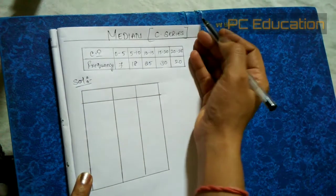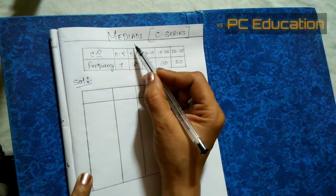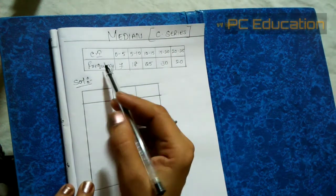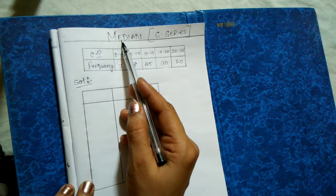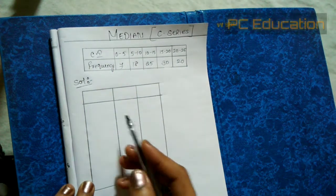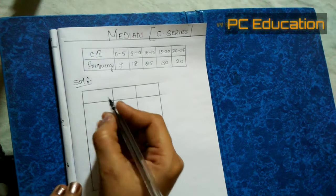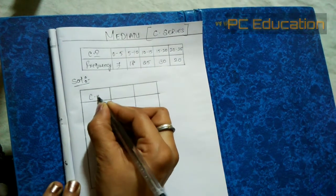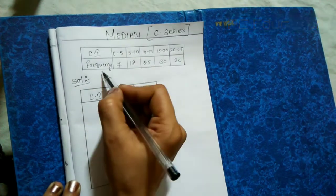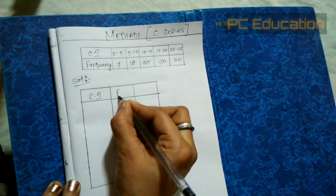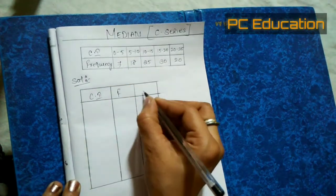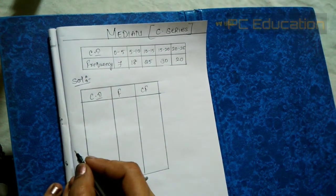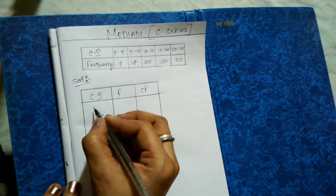Hello friends, today we're going to discuss median for continuous series. For doing the median, we draw three columns: the first column is class interval, the second column is frequency, and the third column is CF, that is cumulative frequency.